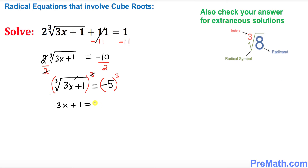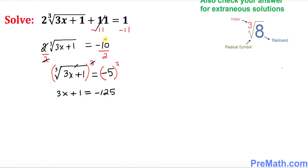Negative 5 cubed is the same as negative 5 times negative 5 times negative 5, which gives negative 125. Now subtract 1 from both sides — the 1 is gone, so 3x equals negative 126.